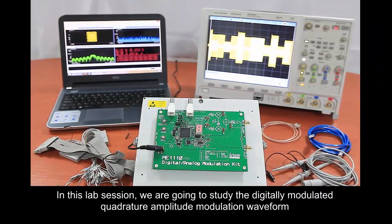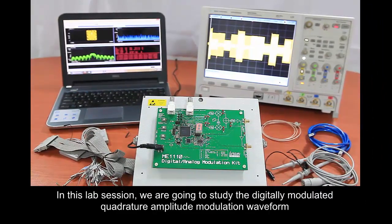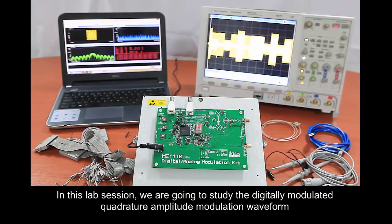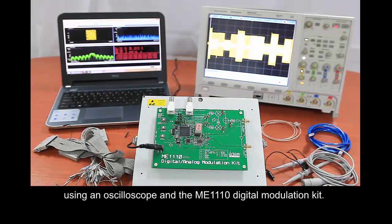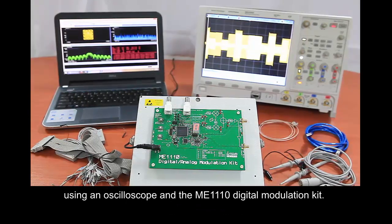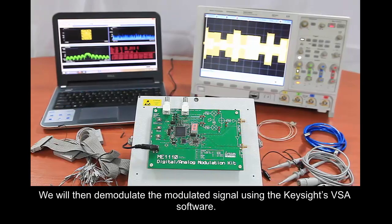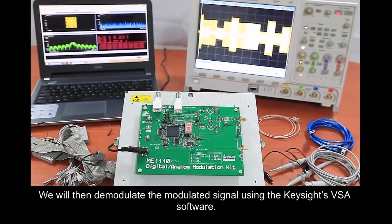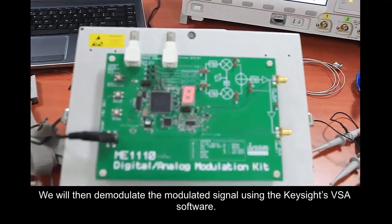In this lab session, we are going to study the digitally modulated quadrature amplitude modulation waveform using an oscilloscope and ME1110 digital modulation kit. We will then demodulate the modulated signal using Keysight's VSA software.